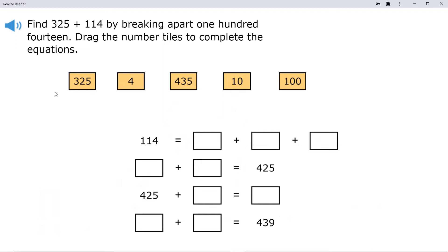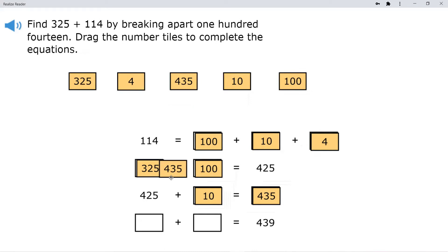Now what they want us to do in this section is we're going to take the numbers and break them apart. So 114, we're going to break it up into its parts, into its place values. So we have the 100 and the 10 and the 4, which makes 114. Next, we have 325 plus 100 will give us 425. 425 plus 10 will give us 435. And then 435 plus the remaining 4 that we have left over. So there's the 100, the 10, and the 4 that made 114. We're adding it in parts. 435 plus 4 gave us 439.